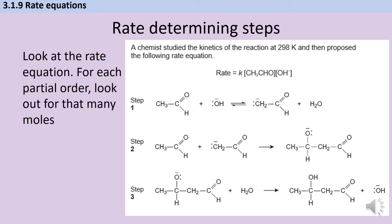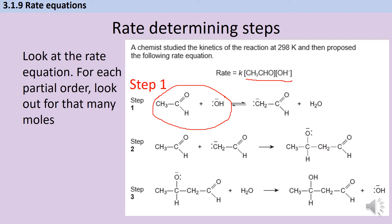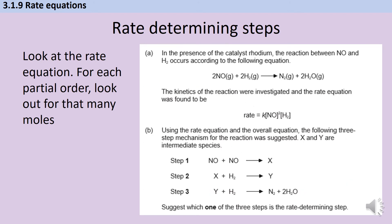For the second question, remember we're looking for everything in the rate equation in the correct proportions. We've got a particular reaction with its rate equation, and I need both reactants present in equal proportions. Looking at the steps, the only one that has both reactants in the right proportions is step one, so my answer is step one.